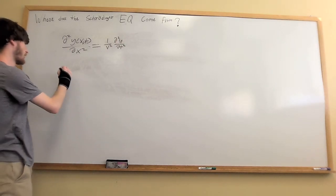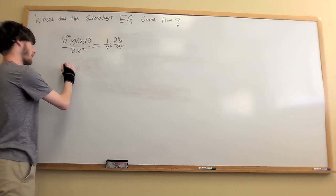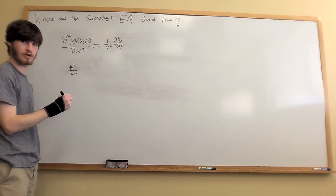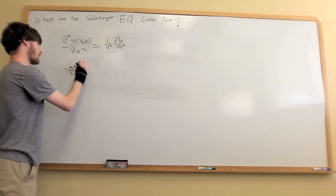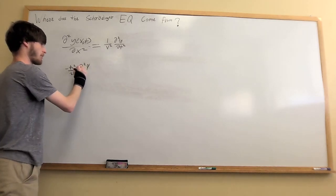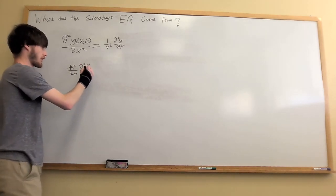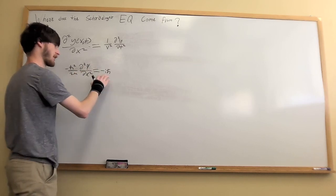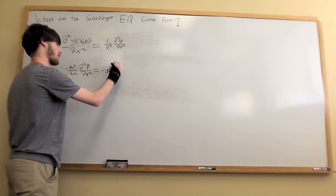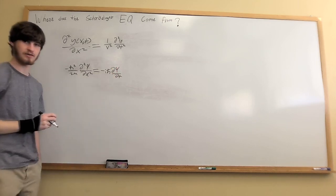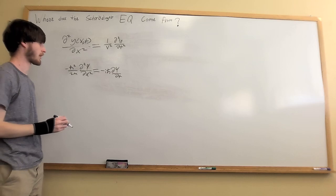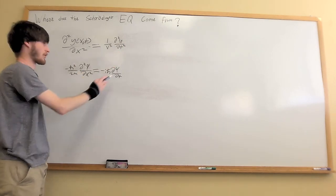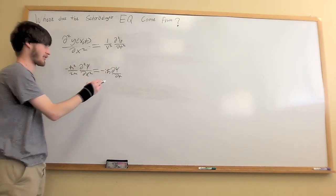Whereas the Schrödinger equation has minus h-bar squared over 2m. We're talking about free space, so there's no potential energy term. Partial squared psi partial x squared equals minus i h-bar partial psi partial t. The main difference between these two wave functions is the mechanical wave function has a second order time derivative, whereas the Schrödinger equation only has a first order time derivative.